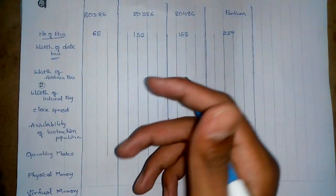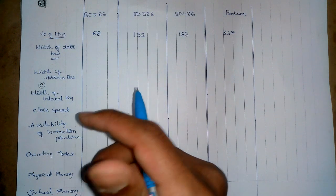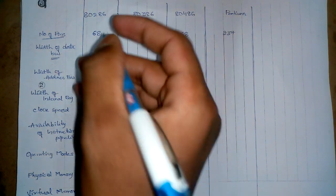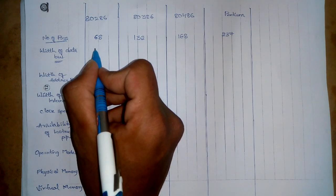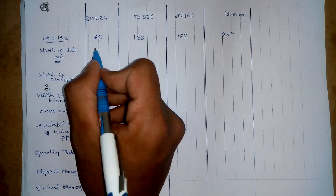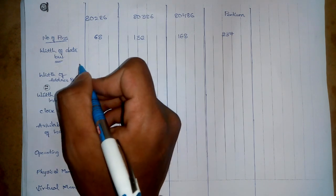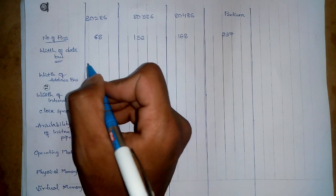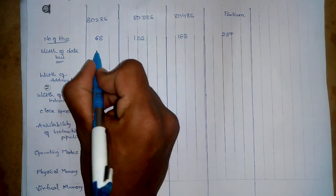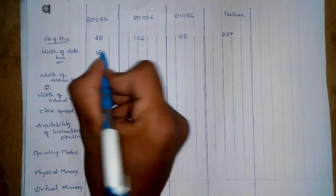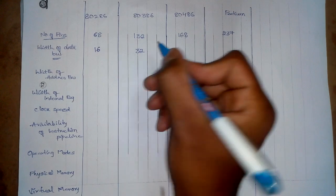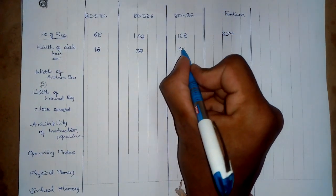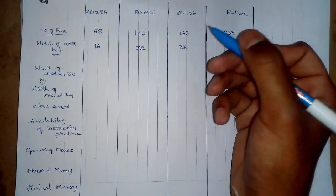The data bus is used to collect data and also give back data to the output. The width of the data bus in the 80286 processor is 16-bit. In the 80386 it is 32-bit, and in the 80486 it is also 32-bit.